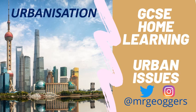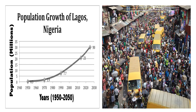Welcome to GCSE Home Learning. This is Urban Issues and is our second lesson on urbanisation. Urbanisation is the growth of cities, the growth of the number of people living in cities. And if we look at Lagos, a large megacity in Nigeria, we can see the population has grown rapidly.